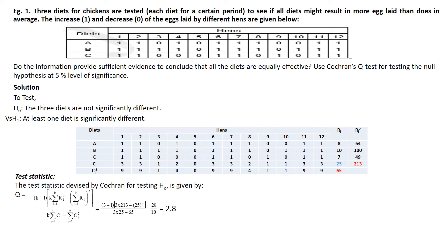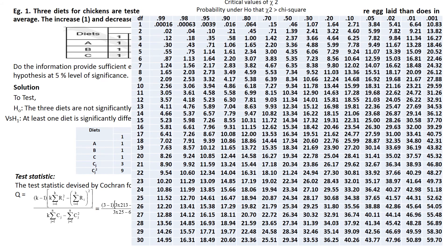The Q-value is 2.8. Now we compare the Q-value to the chi-square table. Whenever we use the chi-square table, we need alpha and degrees of freedom K minus 1. We have K minus 1 equals 3 minus 1 equals 2. The chi-square value from the table is 5.99.